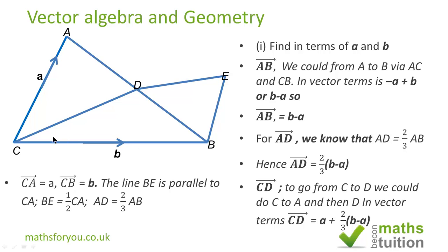Next CD. To go from C to D we could do C to A and then A to D. We know C to A which is a, we know A to D which is 2 thirds of b minus a, so we need to add a plus 2 thirds of (b minus a). Now we need to simplify this.